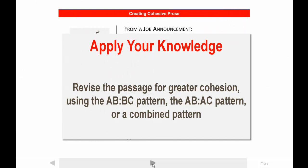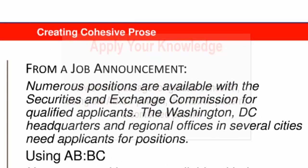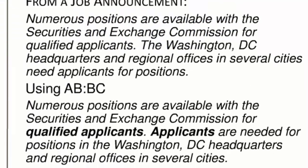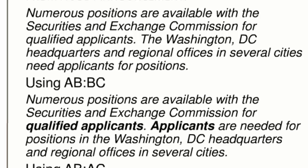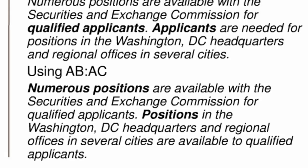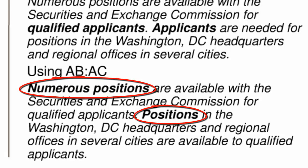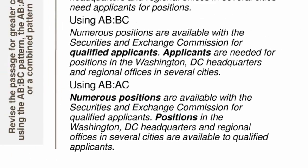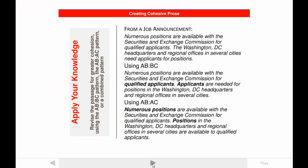Now it's time to check your understanding of cohesion by revising a passage you haven't seen before — this one comes from a job announcement. The specific question asks that you increase cohesion by using one of the cohesive patterns. If you chose the A-B-B-C pattern, your revision would use the new information in the first sentence as the given information in the second sentence. If you chose the A-B-A-C pattern, your revision would use the given information in the first sentence — 'positions' — as the given information in the second sentence. Either revision improves the cohesiveness of the passage.